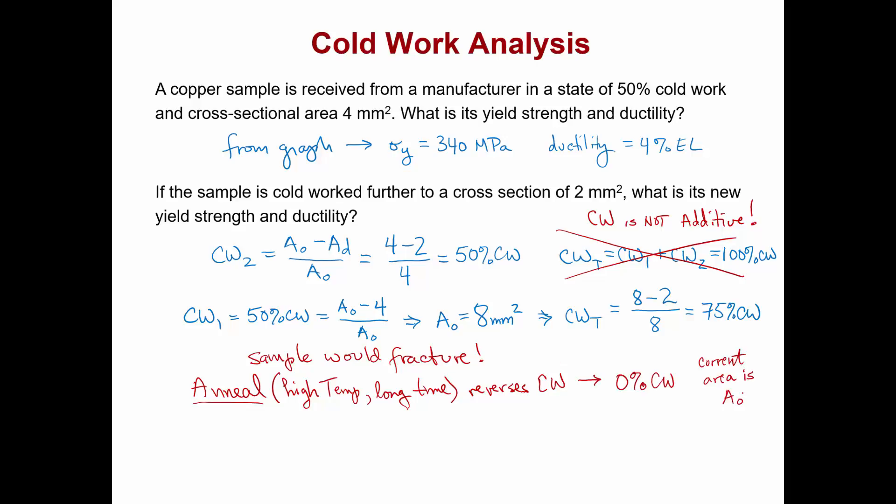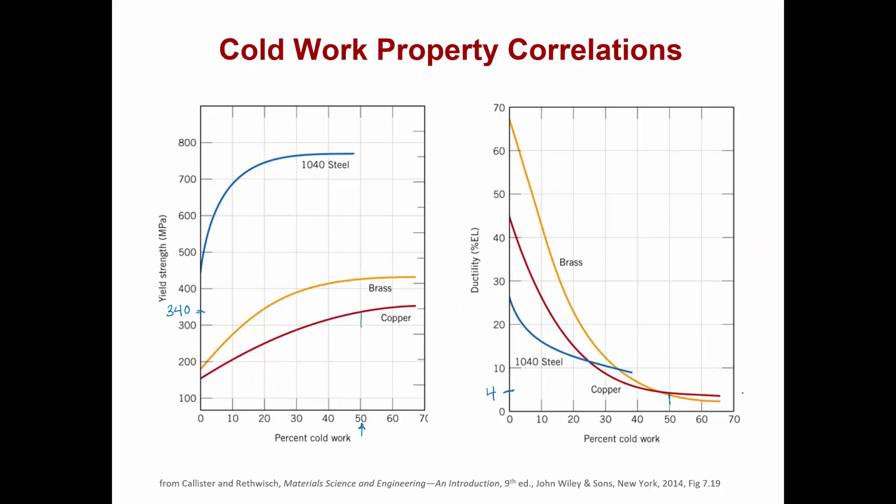Note that if we're interested in looking at the properties of the brass once it's fully annealed and returned to 0 percent cold work, we can take a look at the graphs. At 0 percent cold work, the copper sample has a yield strength of only 160 megapascals,